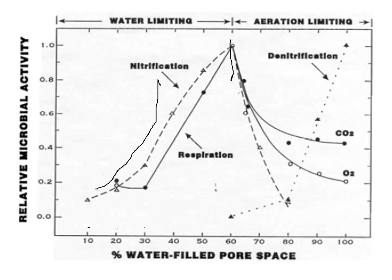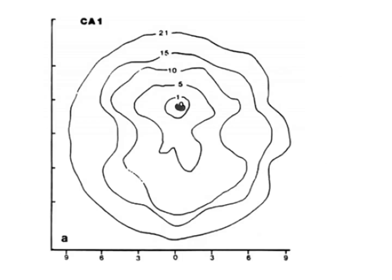At that point — around 70-80-90-100% water-filled pore spaces — denitrification starts to kick off. As shown in the dotted graph, denitrifying organisms start to expand in number as oxygen becomes less available and conditions become more suitable for denitrification.